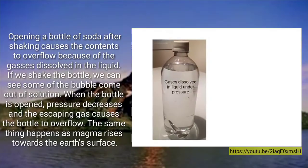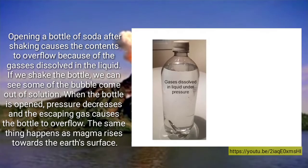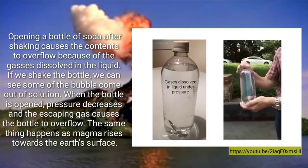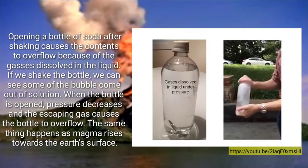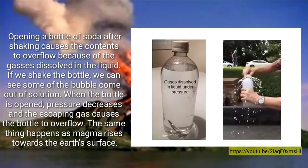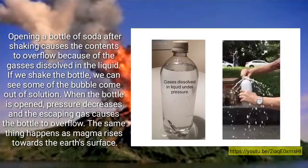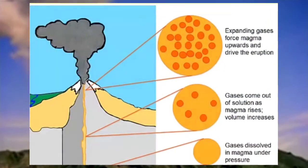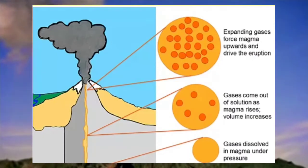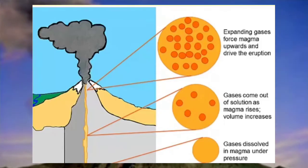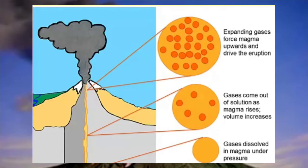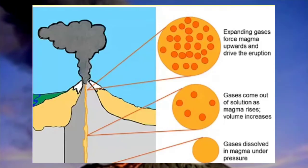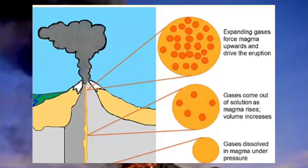Let's consider a bottle or can of soda. Opening a bottle of soda after shaking causes the contents to overflow because of the gases dissolved in the liquid. We normally can see bubbles in the soda; however, if we shake the bottle, we can see some of the bubbles coming out of the solution. And when the bottle is opened, pressure decreases and the escaping gas causes the bottle to overflow. The same thing happens as magma rises towards the Earth's surface. Gases dissolved in magma under pressure come out of solution as magma rises. The volume increases, the expanding gases force magma upwards and drive the eruption. Gas gives magma its explosive character, because the volume of gas expands as pressure is reduced.